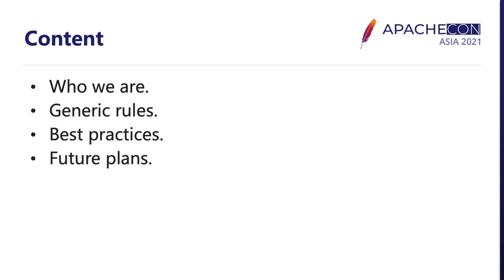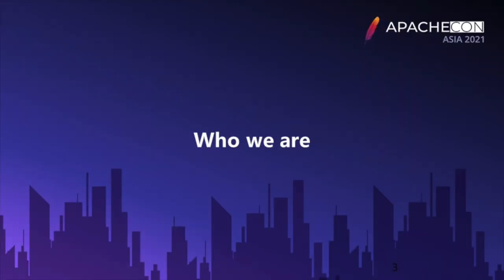This topic consists of four major parts. First, we will give you a brief introduction on who we are and the landscape of the services we built for these communities. In the next two parts, we will walk you through the generic rules and best practices we achieved. And for the last one, we will talk about our future plans. Let me introduce our team and the service landscape.